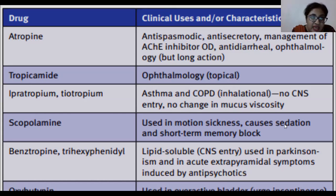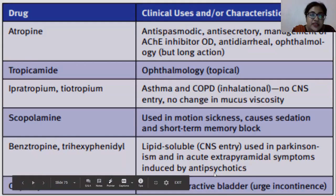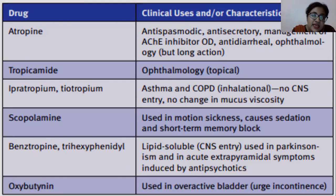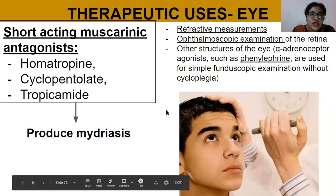Benztropine and trihexyphenidyl are lipid-soluble drugs, so they have CNS entry. They are used in Parkinson's disease and in acute extrapyramidal symptoms induced by antipsychotics. Oxybutynin is used in overactive bladder, which is urge incontinence. Let's now talk about each of these in more detail.